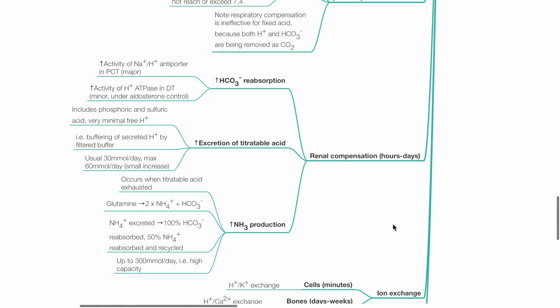Excretion of titratable acid includes phosphoric and sulfuric acid. There is buffering of secreted hydrogen ion by these filtered buffers. Usual production is 30 mmol per day, max 60 mmol per day, indicating low capacity.